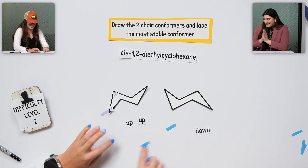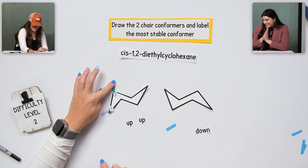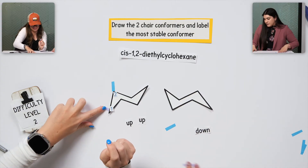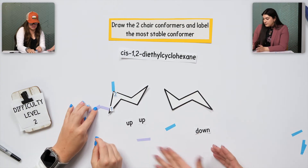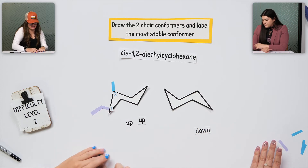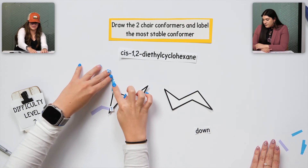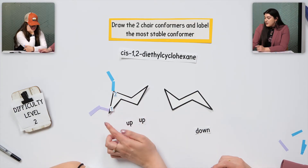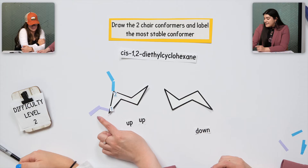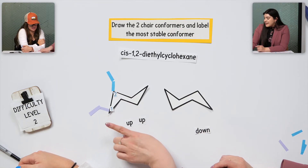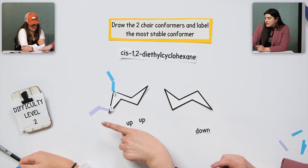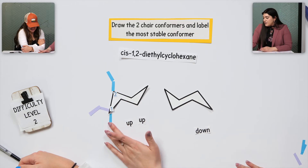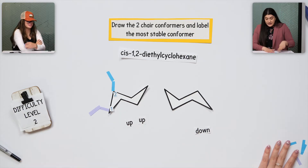So this one will be equatorial and this will be axial. Make sure it's an ethyl. I'll draw it like this with the extra carbon. It's also worth noting that even if it looks like it's pointing down, we're looking at that first bond — that's the direction. Here if something were here, it's pointing down — that axial. The chair flip is just the opposite.